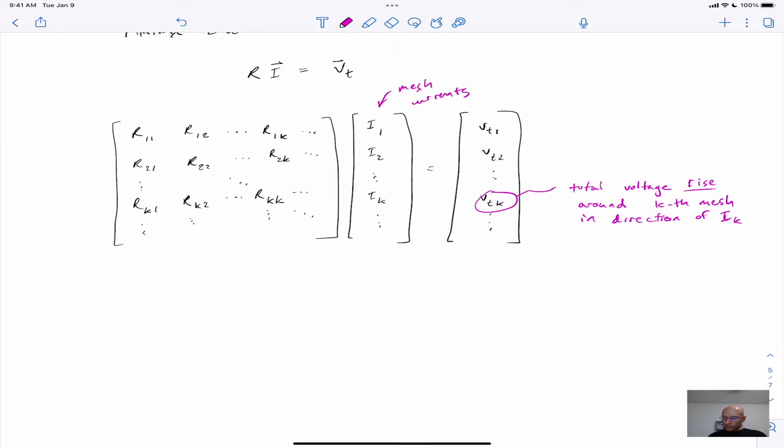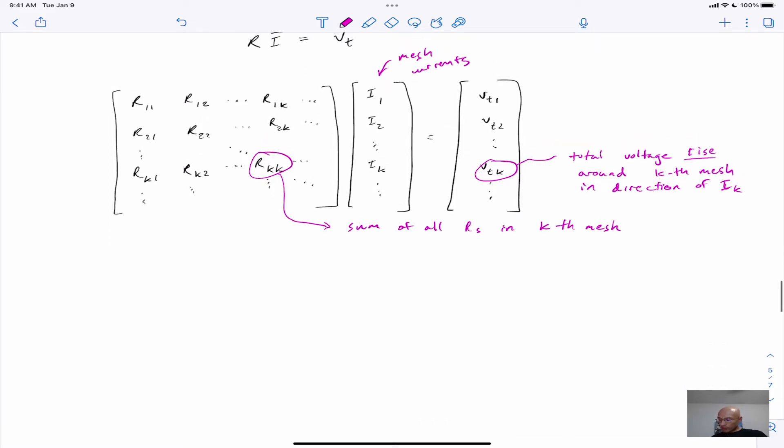And then, the diagonal elements. So let's say here, diagonal elements of our matrix. The RKK diagonal element is going to be the sum of all resistances in the kth loop, kth mesh.